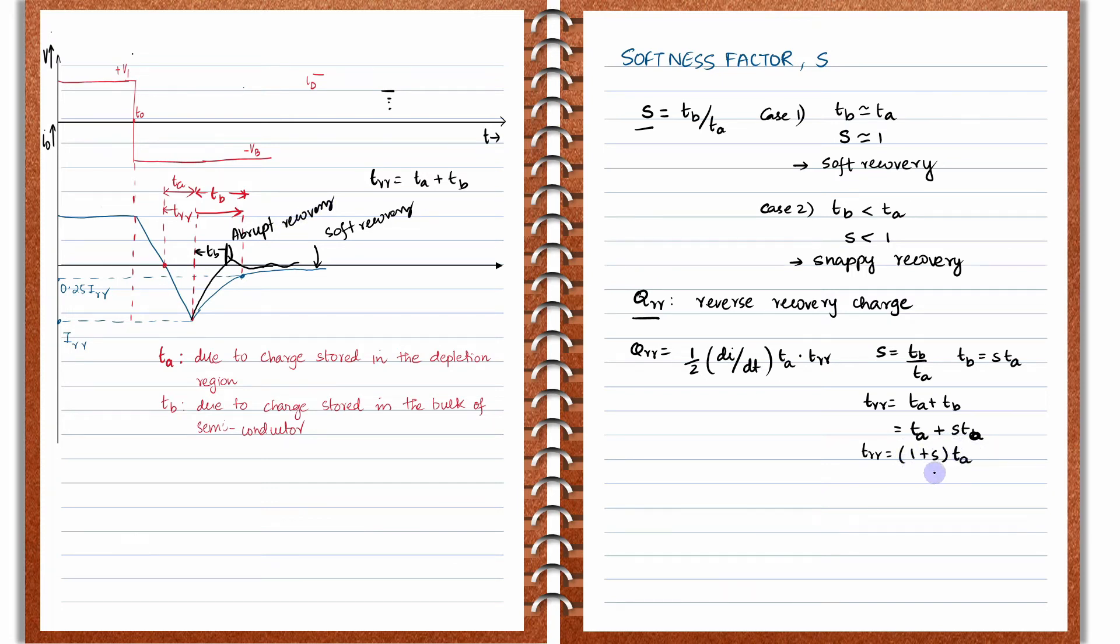TRR is equal to 1 plus S into TA. That value you can substitute here. From this expression you can find TA will be equal to TRR divided by 1 plus S. In this particular expression we can replace this TA value. So QRR will be equal to half into dI/dt—you are replacing TA by TRR divided by 1 plus S—so you will get TRR squared divided by 1 plus S or S plus 1.